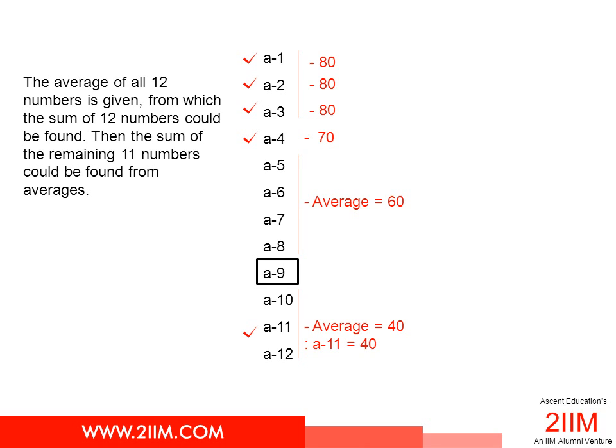Now, this is the second interesting part of the question. The average of all 12 numbers is given, so we can find out the sum of all 12 marks. We know the first four marks, so we know the sum of the first four marks. The average of A5, A6, A7, A8 is given, so we can find the sum of A5 to A8. We know the sum from A10 to A12 because the average is given. So we can infer the exact score obtained by A9.